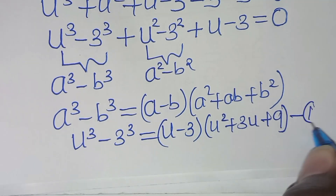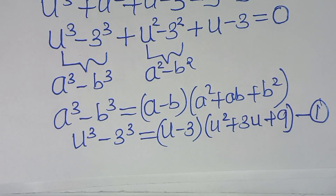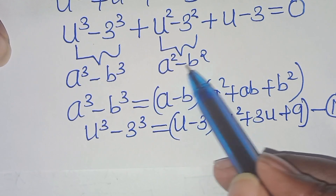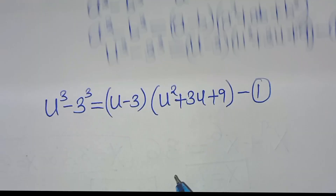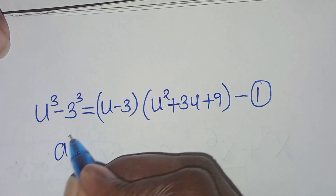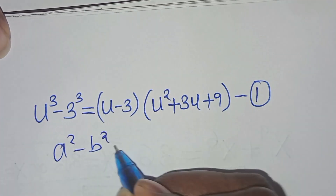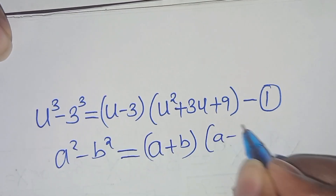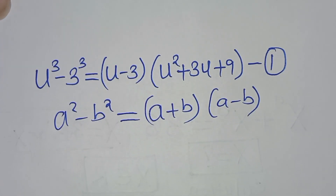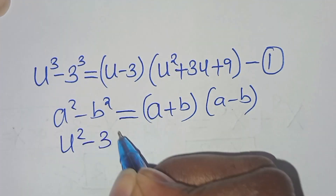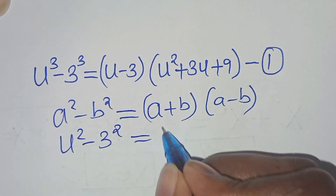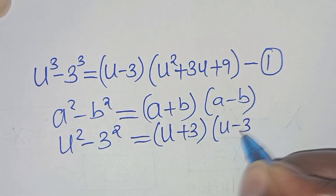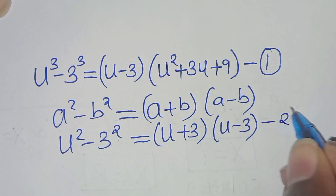The second part is the difference of two perfect squares: a squared minus b squared equals (a plus b)(a minus b). So u squared minus 3 squared equals (u plus 3)(u minus 3). Let's call this equation 2.